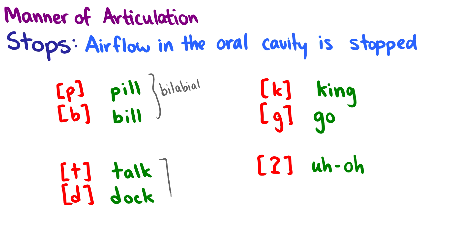With talk and dock, the T and the D, these are your alveolar sounds. So this is airflow is held right behind the alveolar ridge. T and duh is released. Kuh and guh, as in king and go, these are your velar stops. So you have airflow being held right behind the velum, and then it's released. King, go.